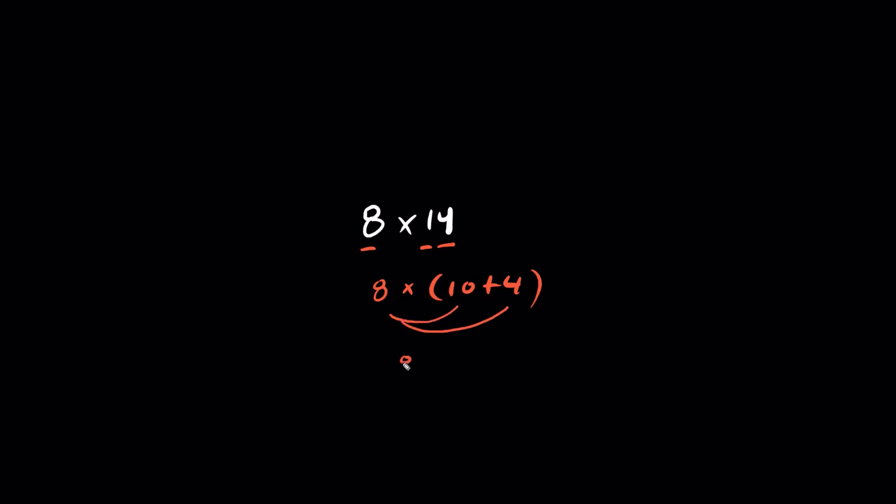8 times 10 is 80. And we add 8 times 4 is 32. What's 80 plus 32? We have 112.